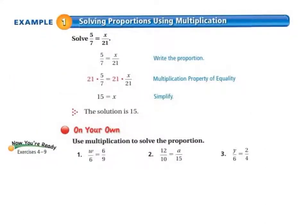So today we're going to start with solving proportions using multiplication. Example 1 says solve 5/7 equals x/21. Our first step is always to write the proportion. This is just like solving any other problem for a variable. We see that x is divided by 21, so we use inverse operations, which means we're using multiplication. We multiply both sides of our equation by 21.